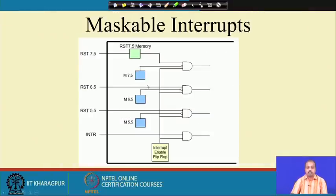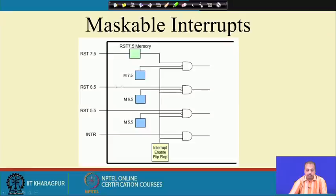The diagram shows the situation: we have mask flip-flops M 7.5, M 6.5, and M 5.5. If these bits are made 0, the input is inverted here. For example, if the M 6.5 bit is 0, you get a 1 at the input of the AND gate, and if the interrupt enable flip-flop bit is also 1, then the 6.5 interrupt is allowed to reach the processor.